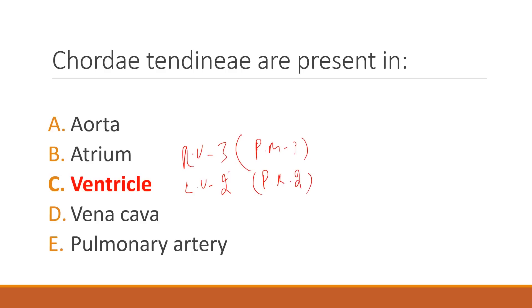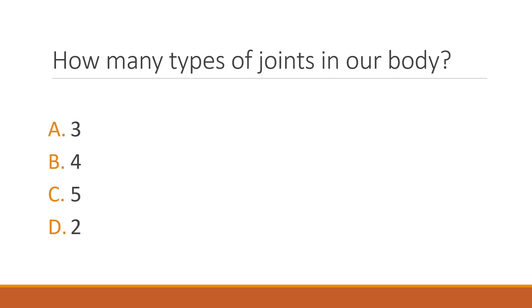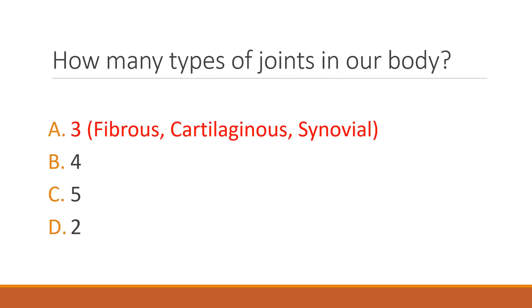How many types of joints are in our body? The correct answer is option A: three — fibrous, cartilaginous, and synovial.